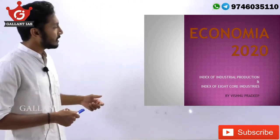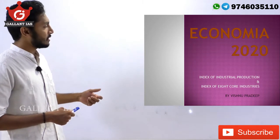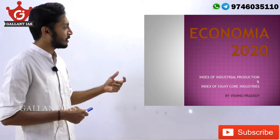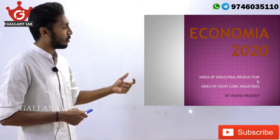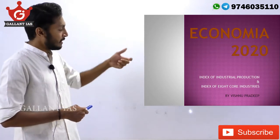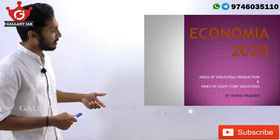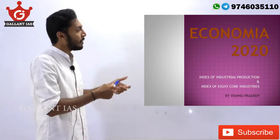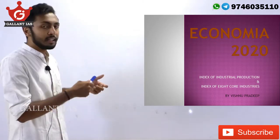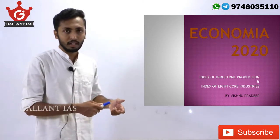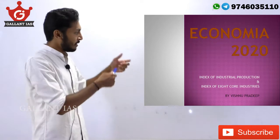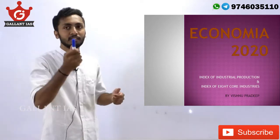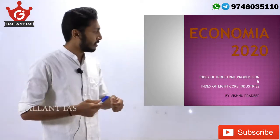The two indexes we are going to discuss are the Index of Industrial Production and the Index of 8 Core Industries. These two indexes are compiled and published by the government of India, and both are on the performance of industrial production.